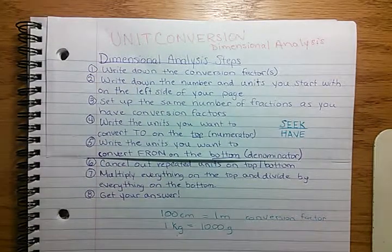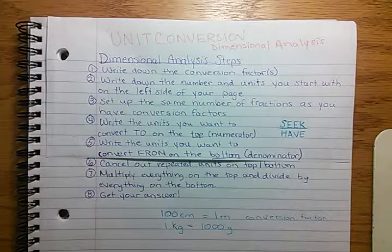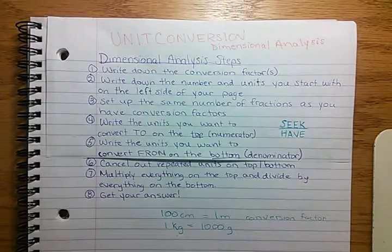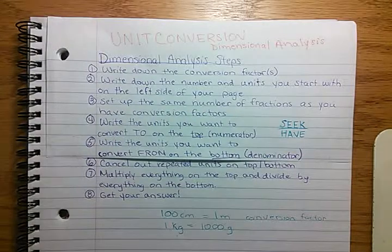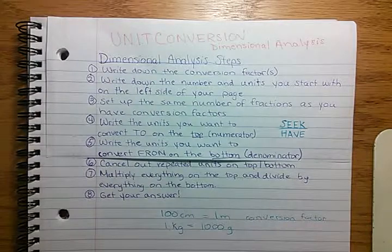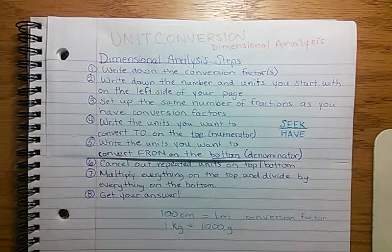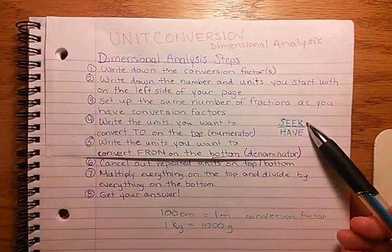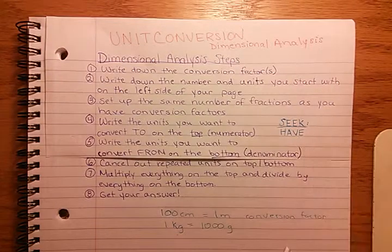Step two is to write down the number and units you start with on the left side of your page. Step three: set up the same number of fractions as you have conversion factors. Step four: write the units you want to convert to on the top — the numerator. Step five: write the units you want to convert from on the bottom — the denominator. Another way to think about that: the units you're seeking go on top, and the units you already have go on the bottom.